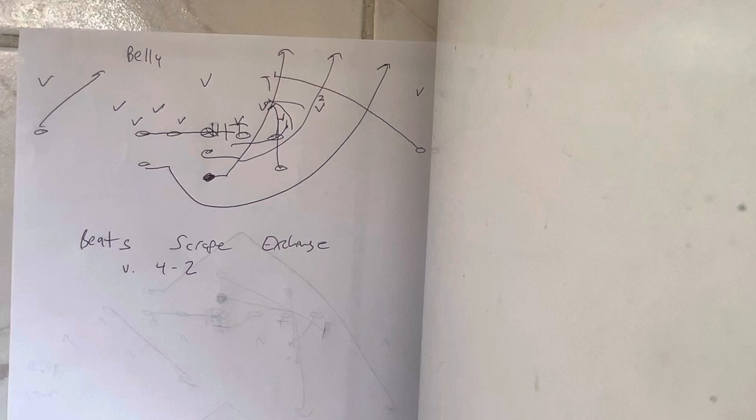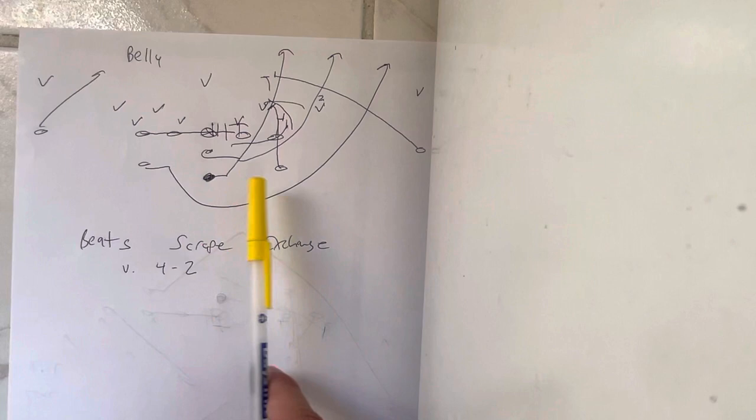So the only time Army does it is basically to beat the scrape exchange versus a 4-2 because they know the backer's going to run himself out of the play. Quarterback reverses out, hands the ball to where the backer isn't. That's it.